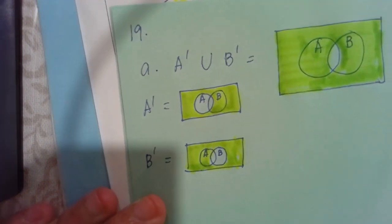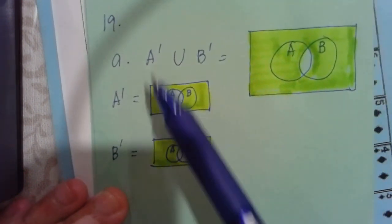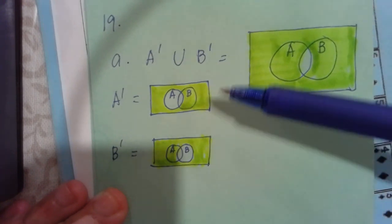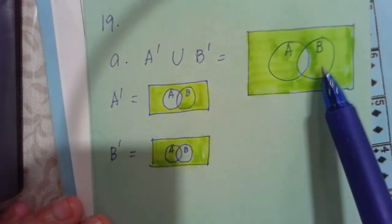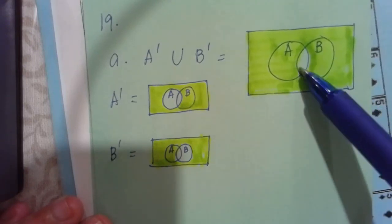That's it. So that's the answer for A prime union of B prime. Again, this is for A prime. That's for B prime. And when we combine them, that's it. You are not supposed to shade this.